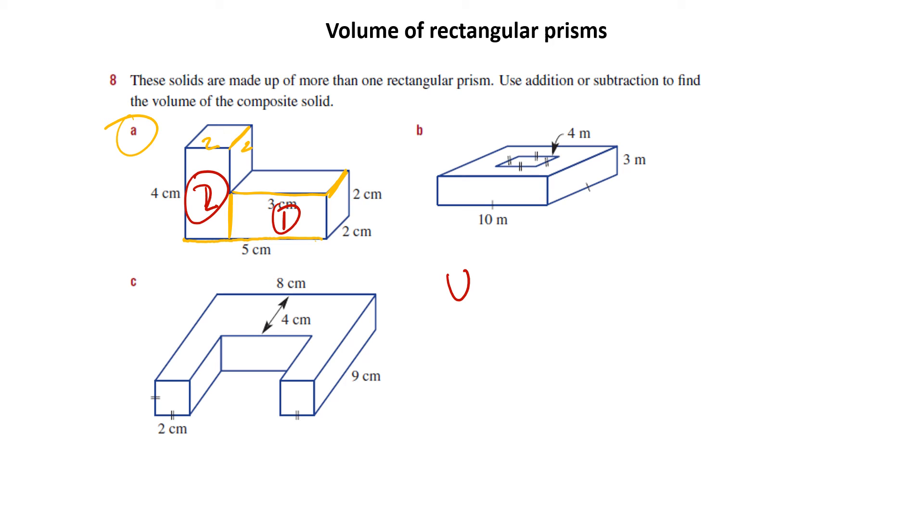So volume one, that's my one there. Length times width times height. It's going to be 3 times a width, which we said was 2. And the height is going to be 2. So that's 3 times 2 is 6 times 2 is 12. And that's going to be centimeters cubed.